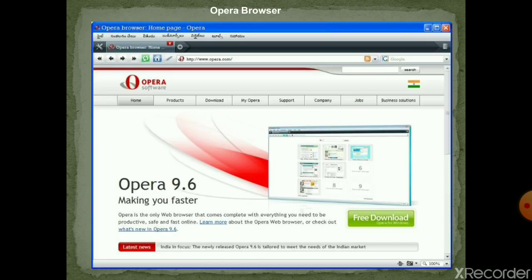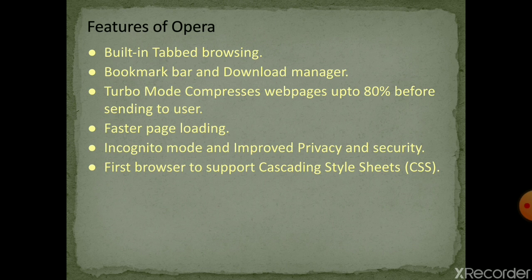If you open the Opera browser, the interface looks like this — I recommend all of you download Opera and try it. Opera is offered free of charge on computers and mobile phones. The best features of Opera include built-in tab browsing, bookmarks bar, download manager, and Turbo Mode — which compresses web pages up to 80% before sending to users. There is also faster page loading, incognito mode, improved privacy and security, and it is the first browser to support maximum all cascading stylesheets.